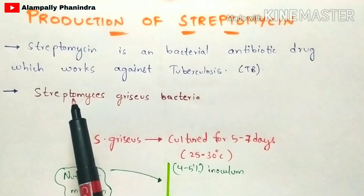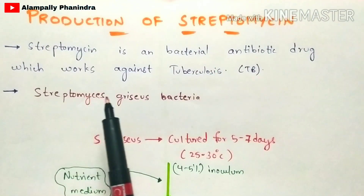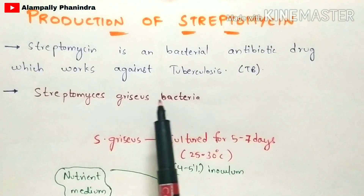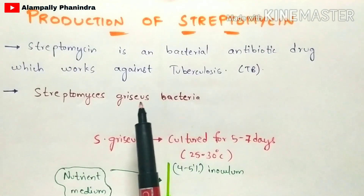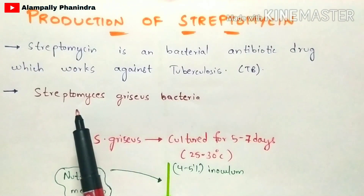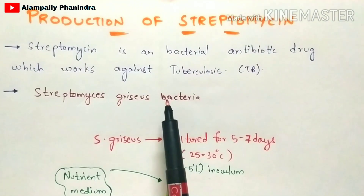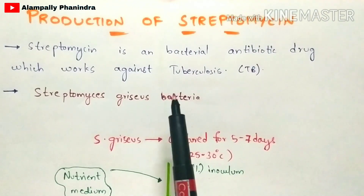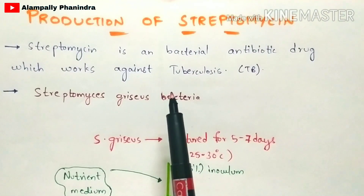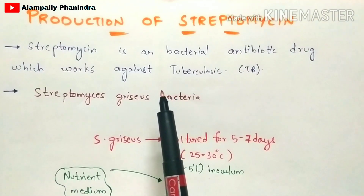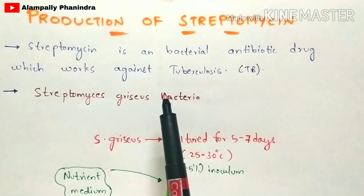Streptomycin can be produced from a bacteria called Streptomyces griseus. It is mainly obtained from this microorganism. Normally, the production of streptomycin is done by using the fermentation process.